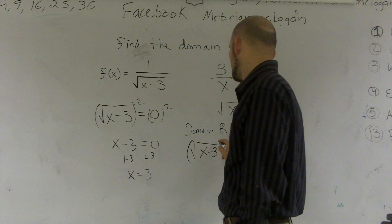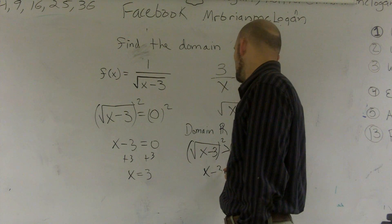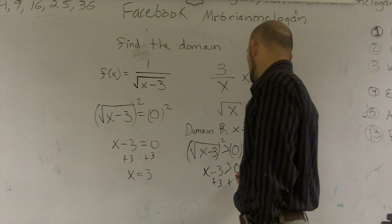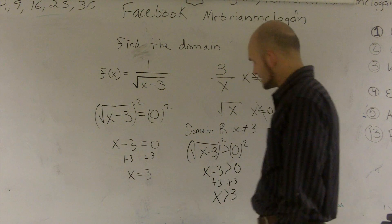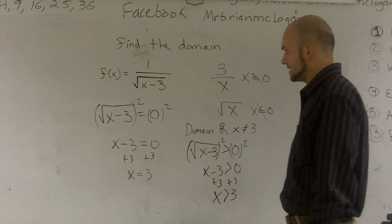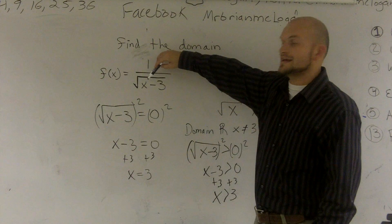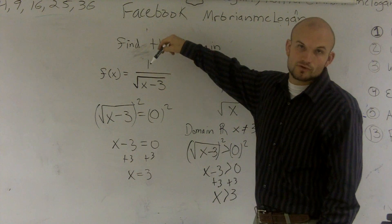So again, I do the exact same steps: square it, square it, add 3. So this says x has to be greater than 3. So let's see if that makes sense. If I pick a number that's greater than 3, let's say 5. 5 minus 3 is 2. I can take the square root of 2.